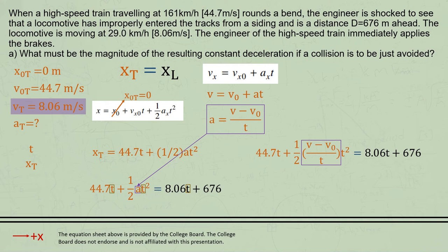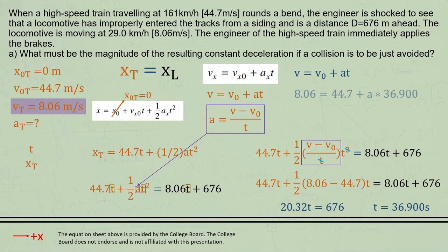That gives us this equation, which now only contains one unknown variable, time, which we can then simplify and solve for t.